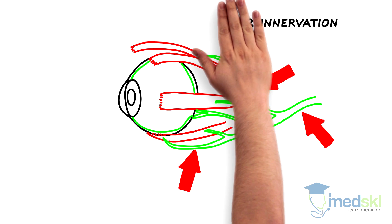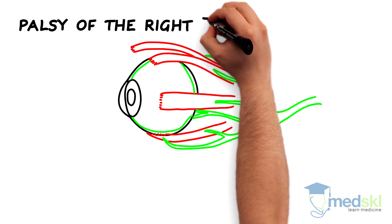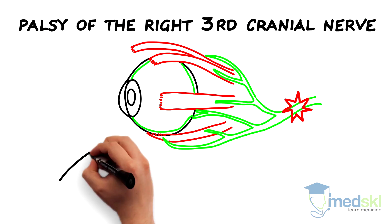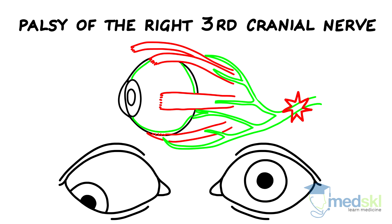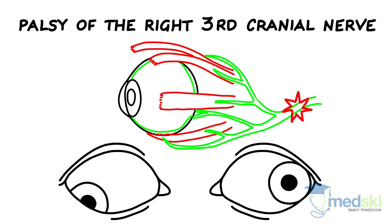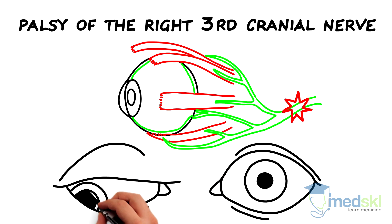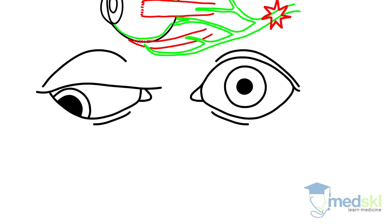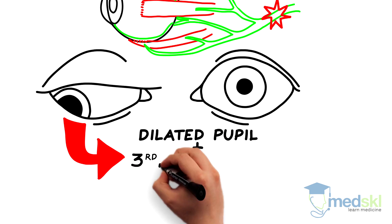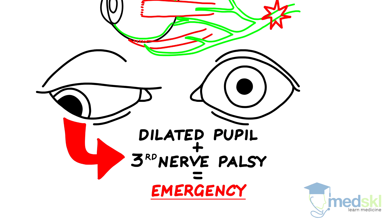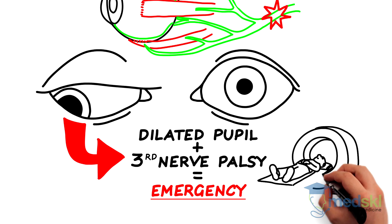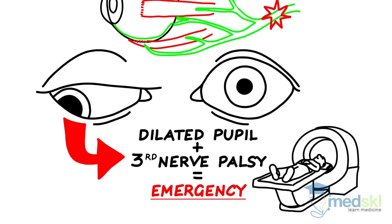A diagnosis you cannot afford to miss is a palsy of the third cranial nerve. This will present with limited eye movements — typically an inability to elevate, depress, and adduct the eye — with the eye presenting in a down and out position. The eyelid will be droopy and the pupil may be involved and dilated. A pupil-involving third nerve palsy is an emergency due to the possibility of a brainstem aneurysm, and neuroimaging must be ordered immediately.